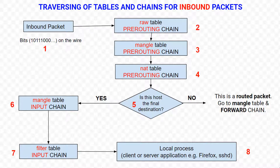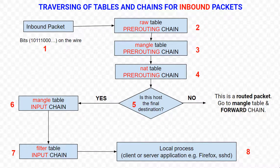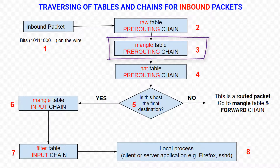After that, the packet starts to go through a series of steps in the Linux kernel before it's either sent to the correct local application, client or server, or dropped. The packet starts traversing the rules from the raw table of the pre-routing chain. This is where connection tracking takes place, and in this table and chain we add rules that match packets that should skip the connection tracking system.